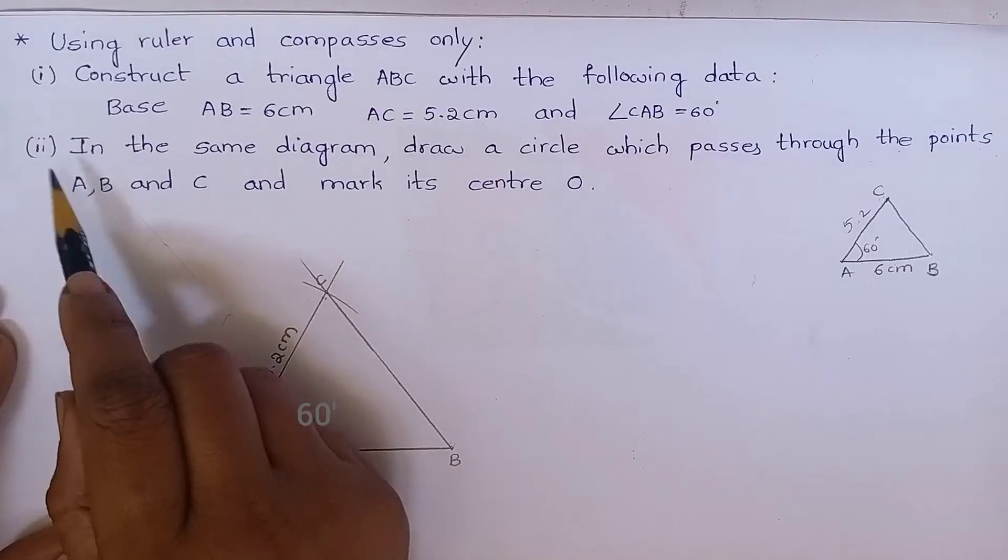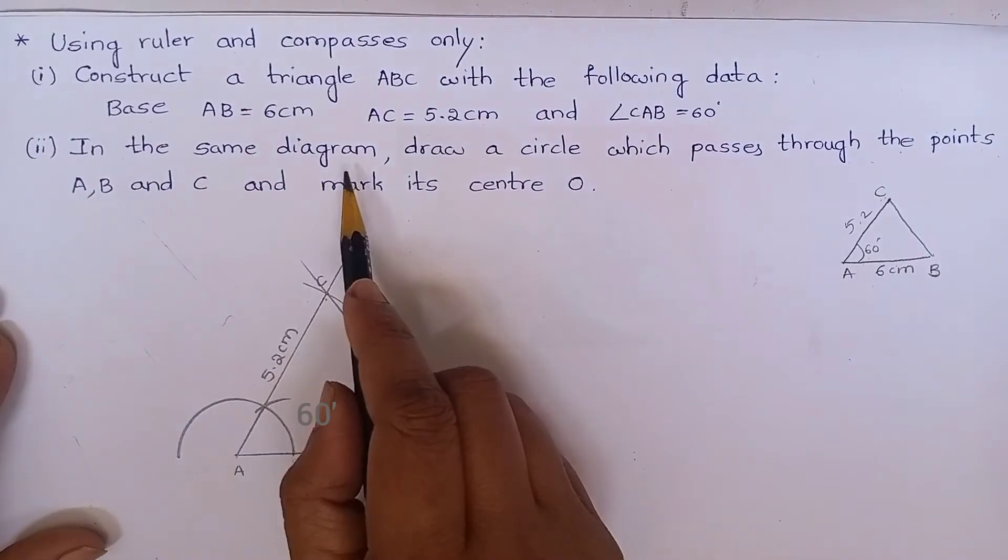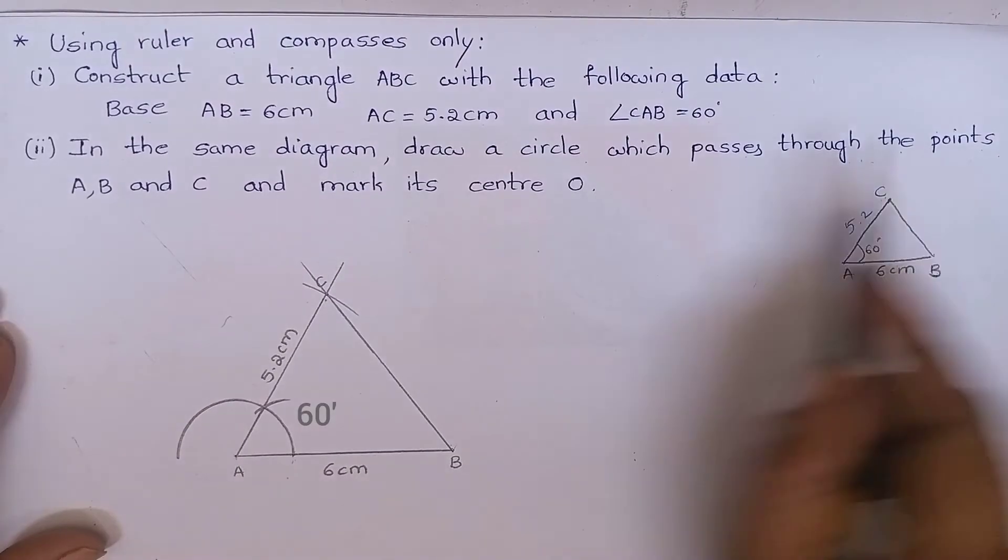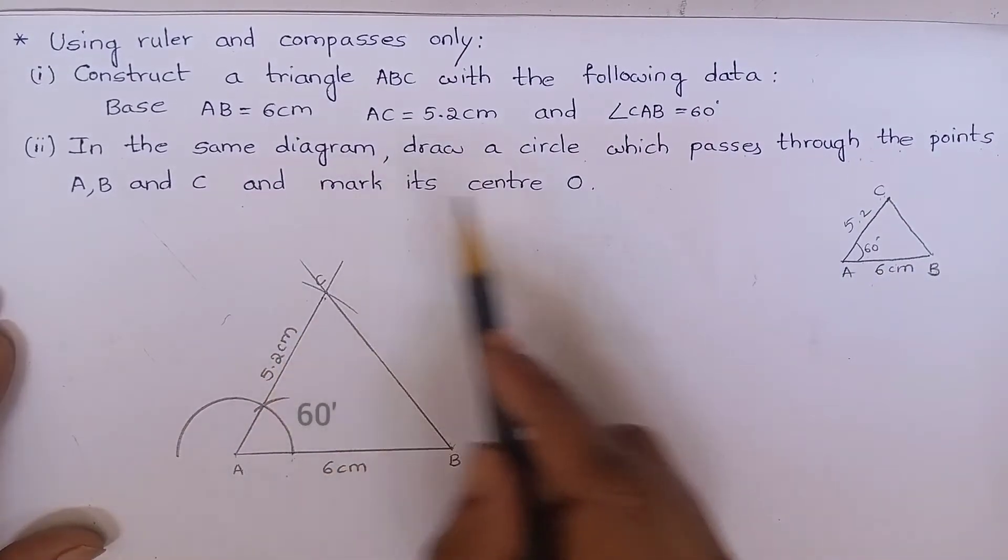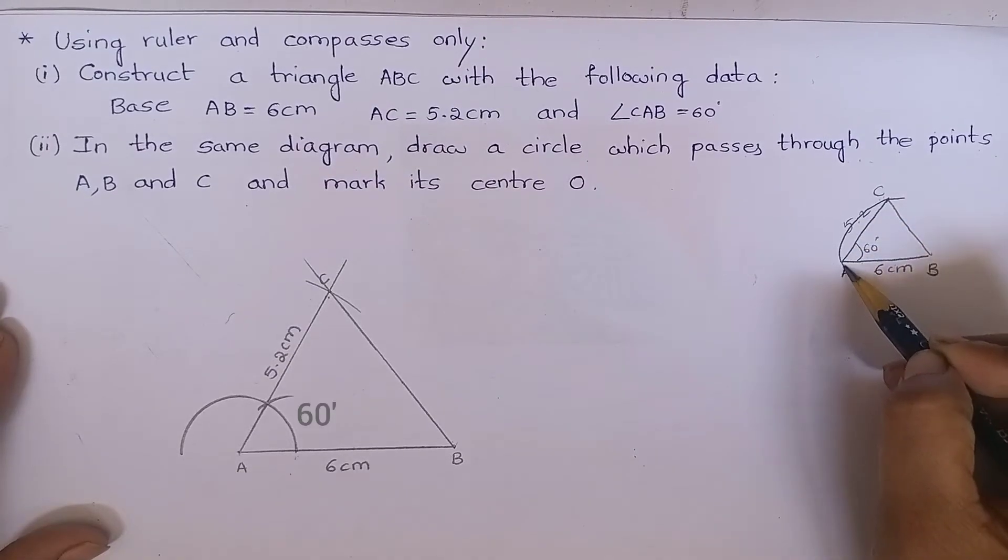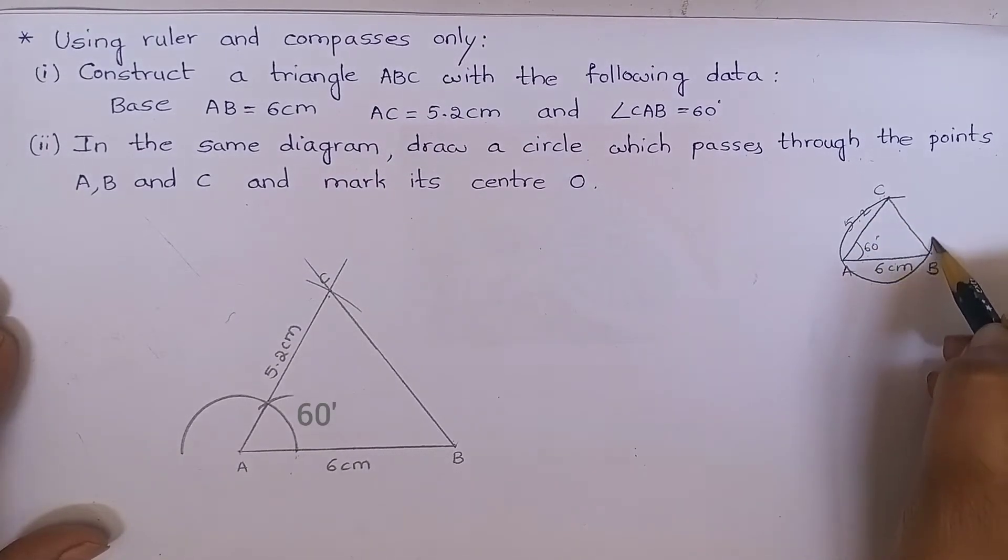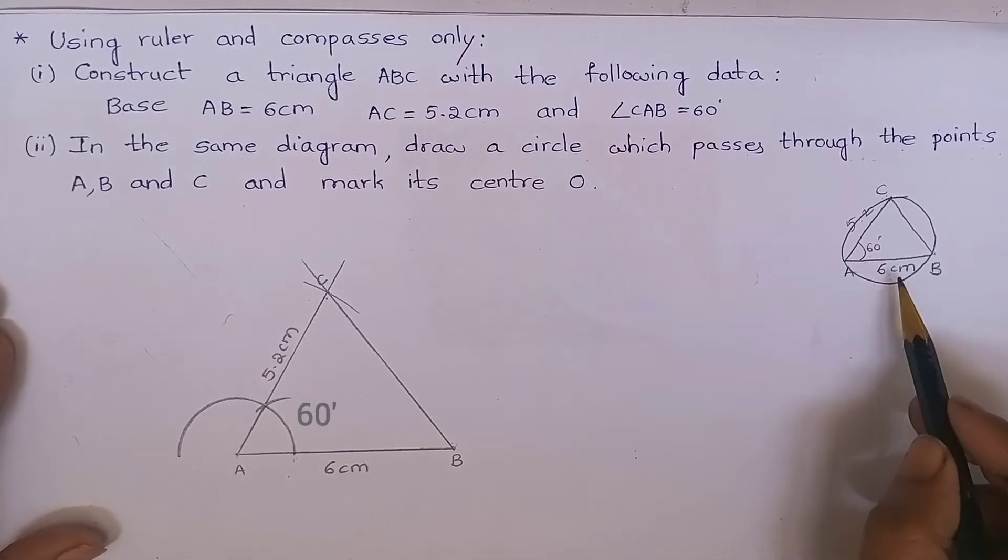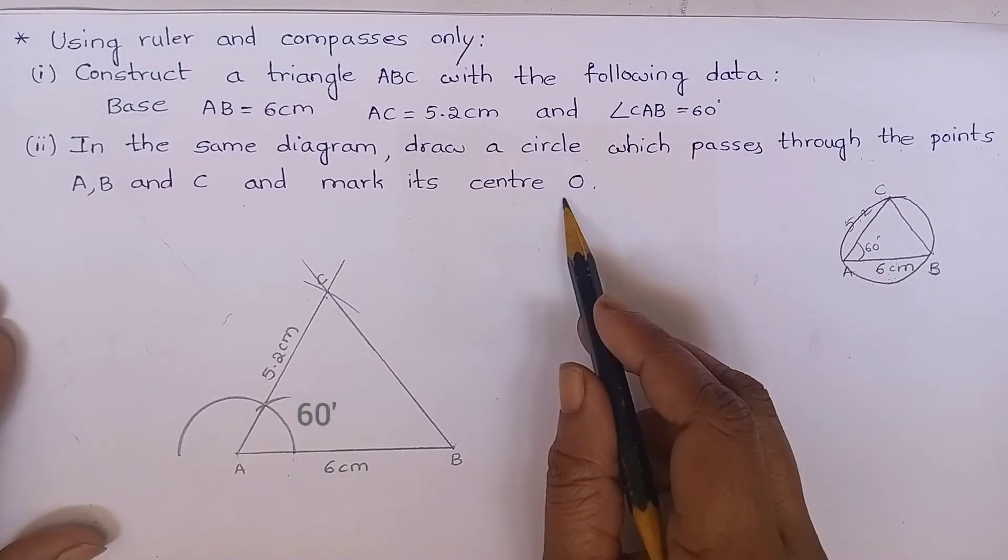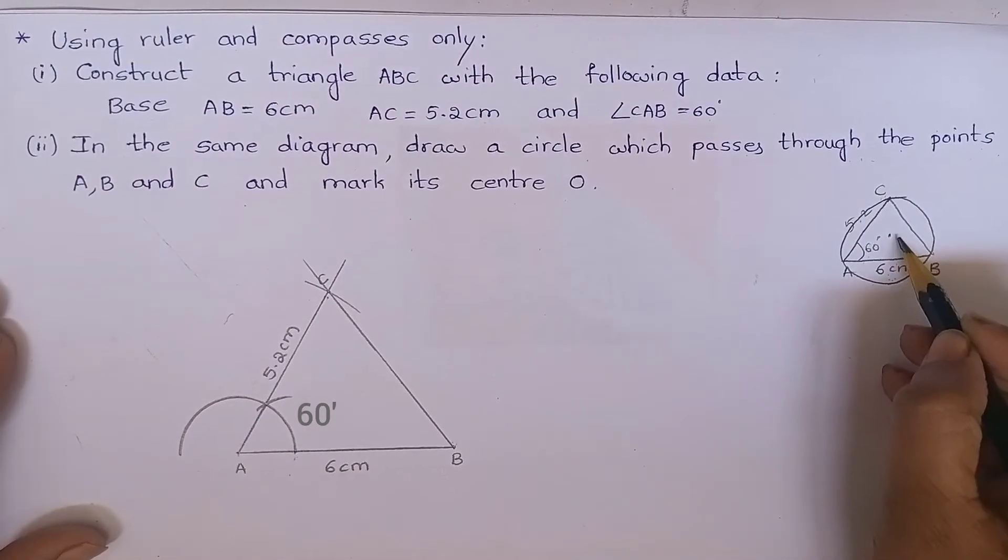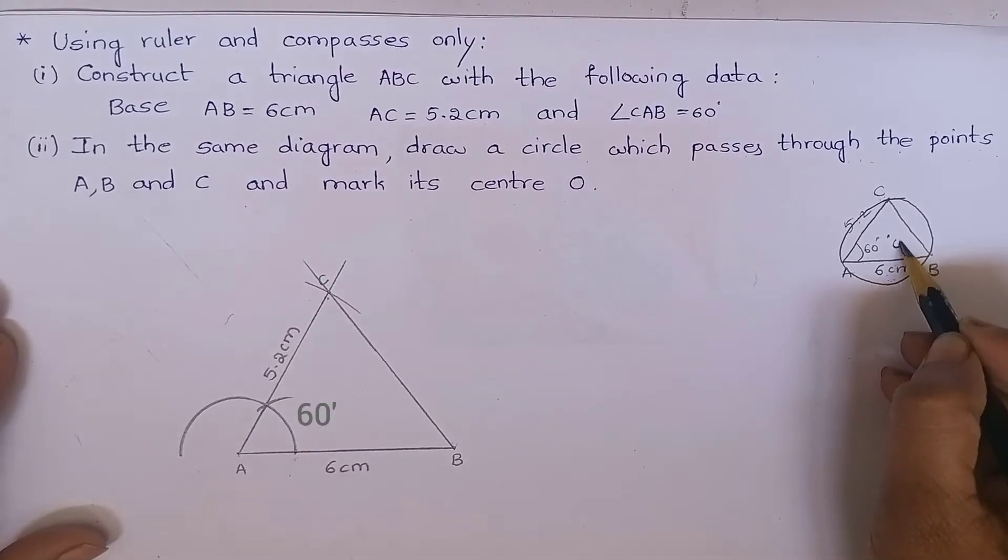Now let's go for the second one. In the same diagram, draw a circle which passes through the points A, B, and C. We have to draw a circle which passes through A, B, C points. It is nothing but the circumcircle of a triangle. And mark its center as O. The circumcenter, we have to mark it as O.